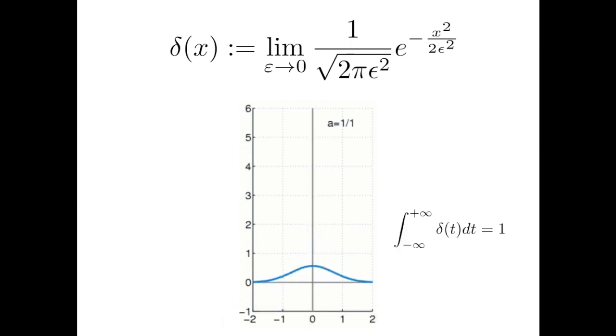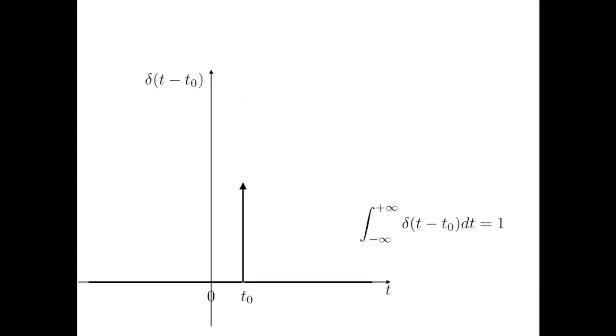Obviously, also in this case, the area below the function is equal to 1, which is probably something you learn in statistics or probability theory, saying that there is a normalization that makes the sum of all probabilities equals to 1, to 100%. So for any value of epsilon, the area below a Gaussian function is equal to 1.